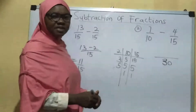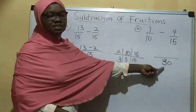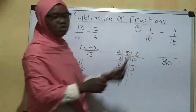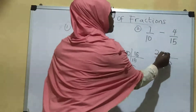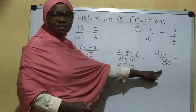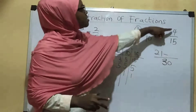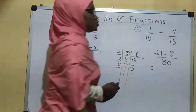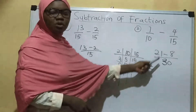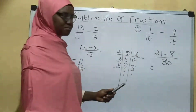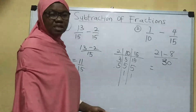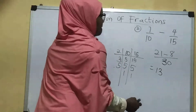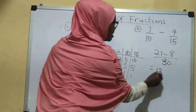So now I start my division. 30 divided by 10 is 3, and 3 times 7 is 21. How many 15s can I get in 30? That's 2, and 2 times 4 is 8. So now we have 21 minus 8 over 30. 21 minus 8 is going to be 13. So the answer is 13 over 30.